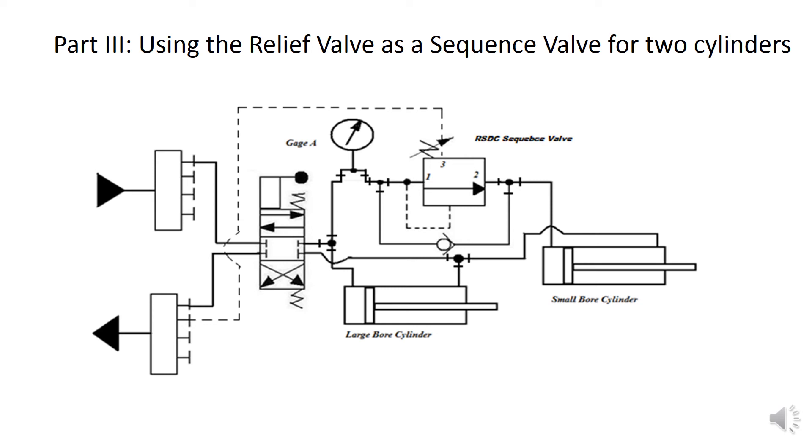The valve is normally not passing. It senses pressure at the inlet port. It uses an external drain, which is connected between port 3 of the valve and the return manifold. Since the valve is normally not passing, we can actually use it to prevent one actuator from moving before another one does. In this case, it's a pair of cylinders, but it could be a motor and a cylinder. It doesn't really matter.